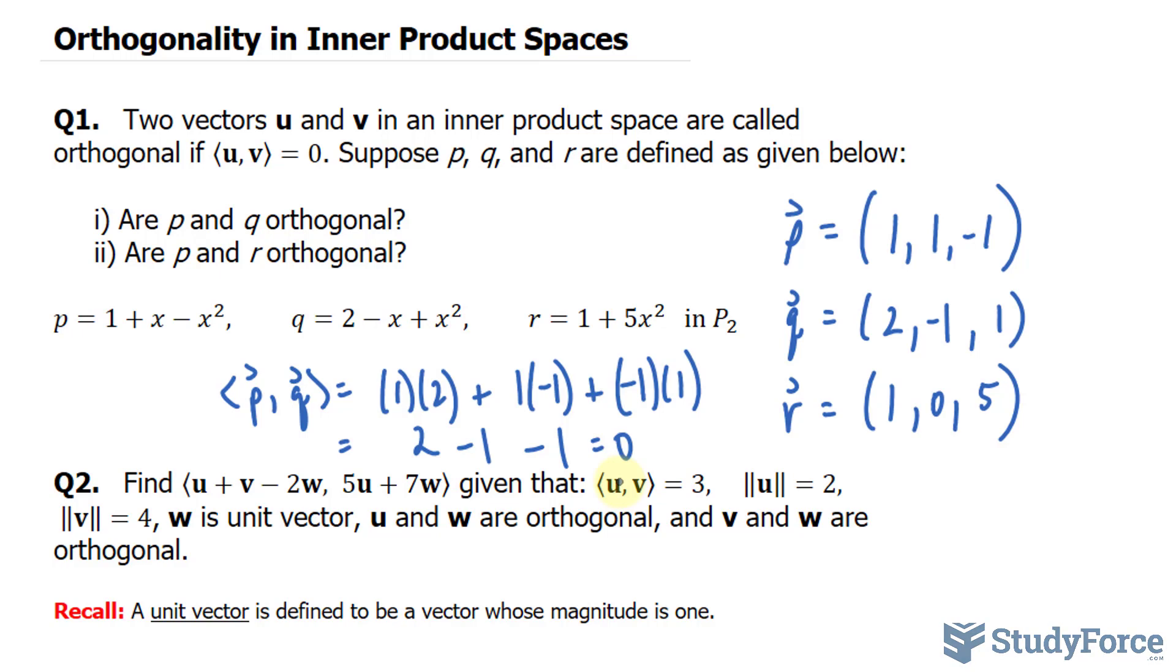What about p and r? This time we have the vector r: 1 times 1, plus 1 times 0, plus negative 1 times 5. The sum of these ends up being negative 5. So these two are not at right angle to each other.